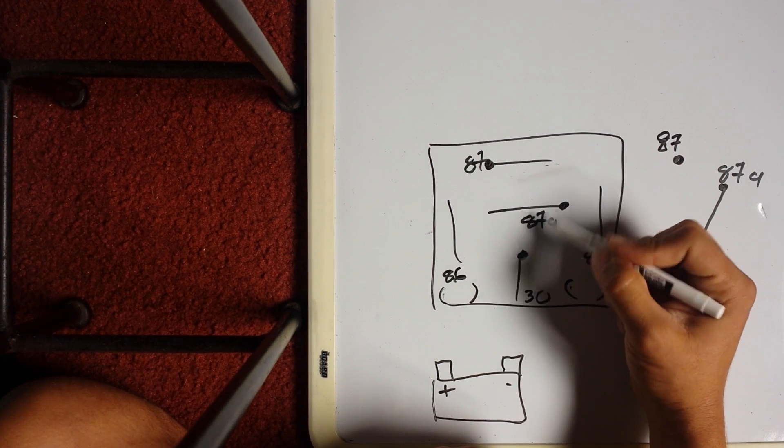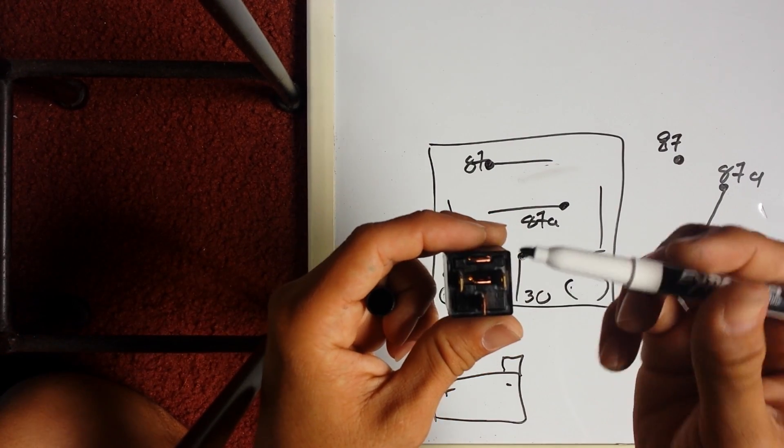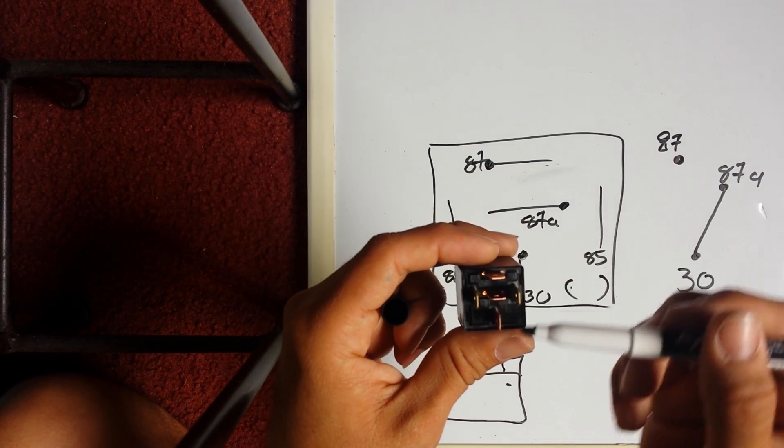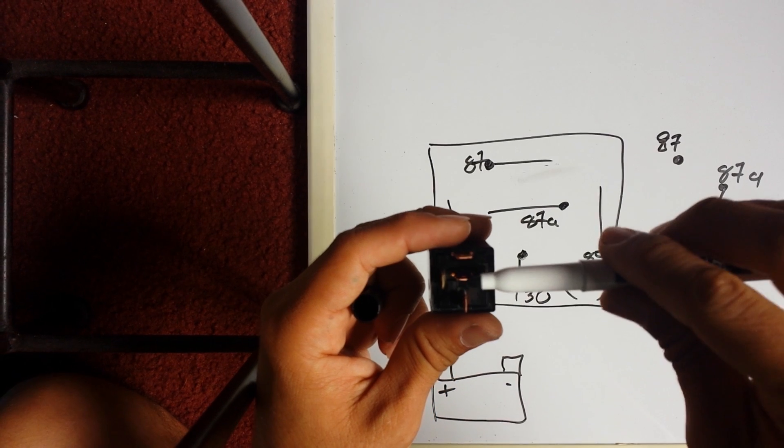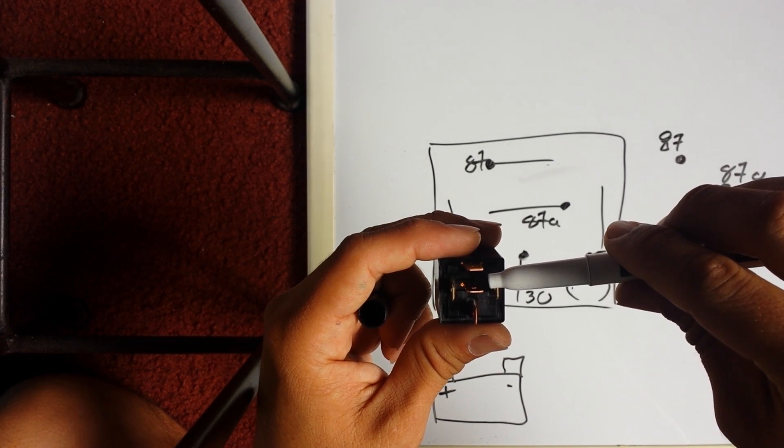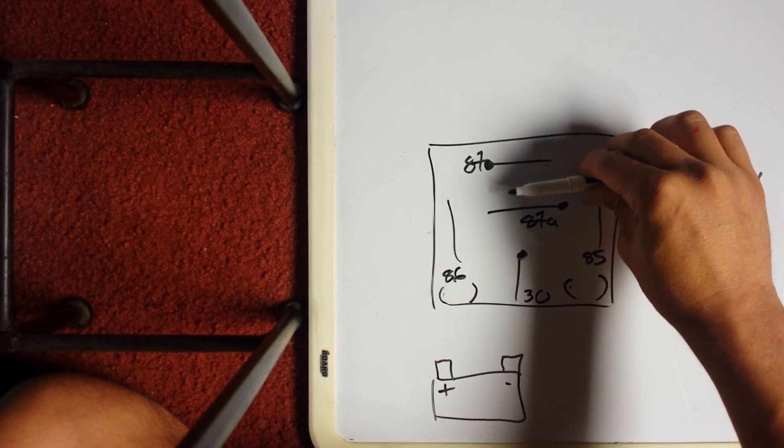Now if you got your continuity tester, you'll see that there's no more continuity between these two. You're gonna see it switched from 87a to 30. So it's just relaying, you know what I mean. In a sense, you can consider it like a little lever inside.